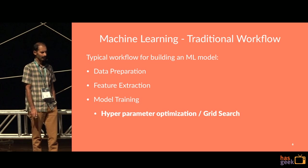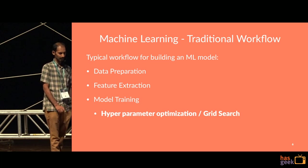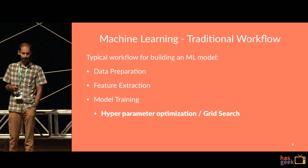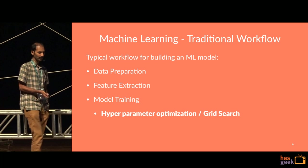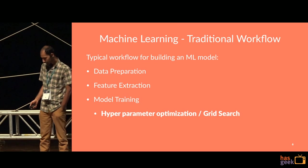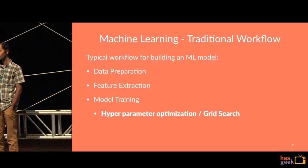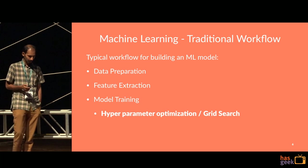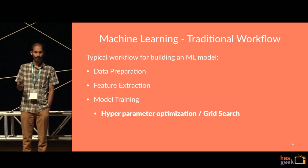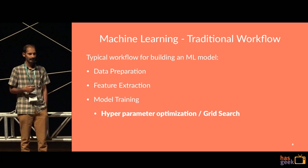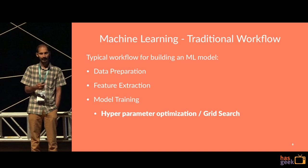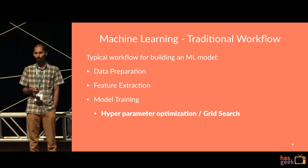If we look at a traditional machine learning workflow, you do data preparation, feature extraction, and then train your models. Part of training involves something called hyperparameter optimization or grid search. What you do is find the best model through a set of parameters that you specify. It goes through all the combinations and gives you the model with the best performance.